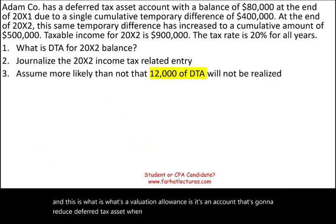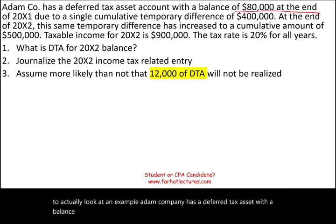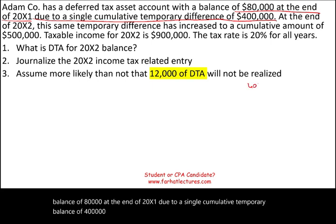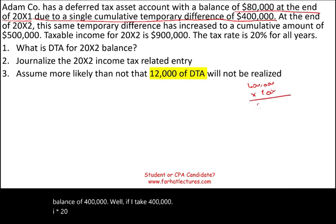The best way to illustrate the concept is to look at an example. Adam Company has a deferred tax asset with a balance of $80,000 at the end of 20x1, due to a single cumulative temporary difference of $400,000. If we take $400,000 and multiply by a 20% tax rate, we get $80,000.